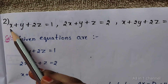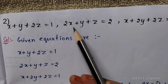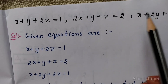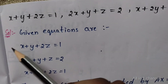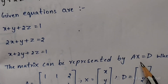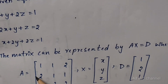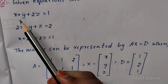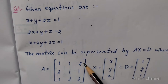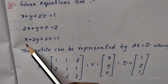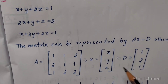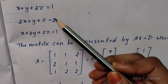Given equations are x plus y plus 2z equal to 1, 2x plus y plus z equal to 2, x plus 2y plus 2z equal to 1. We need to find solutions for x, y, z. Given equations are written as the matrix equation Ax equal to d, where A equals the coefficient matrix of x, y, z in the 3 equations: 1, 1, 2; 2, 1, 1; 1, 2, 2. Variables are x, y, z. Constants d equal to 1, 2, 1.